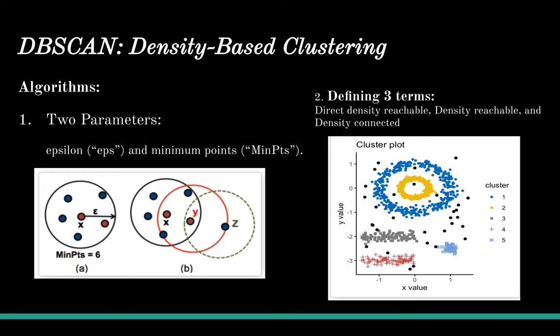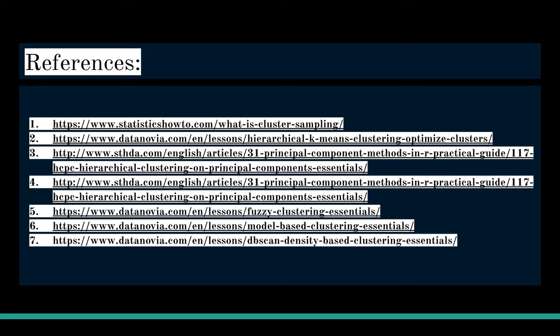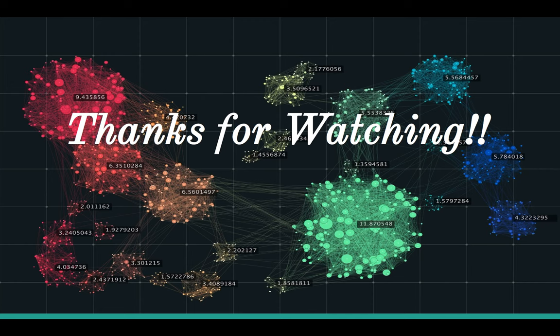Next in the algorithm, we define three terms: direct density reachable, density reachable, and density connected. Here are the references we used throughout this project to collect our data and information. We want to thank you for watching.